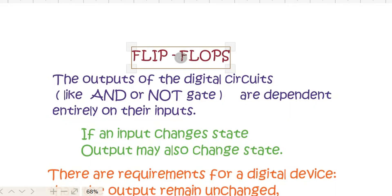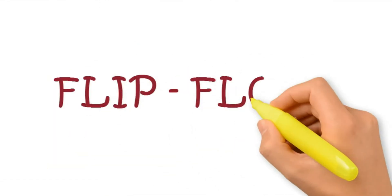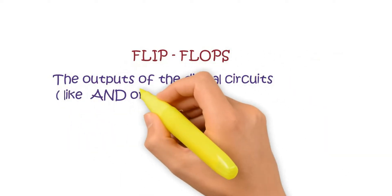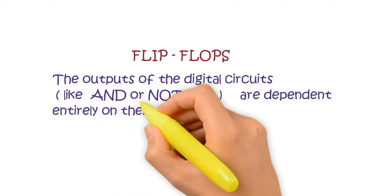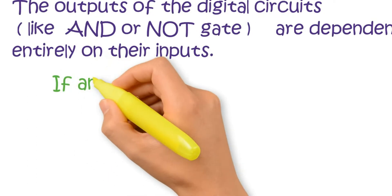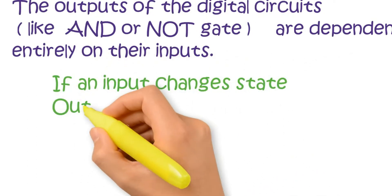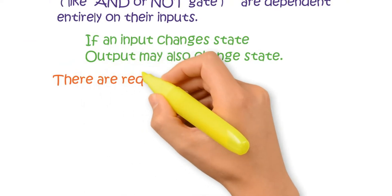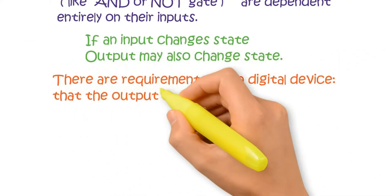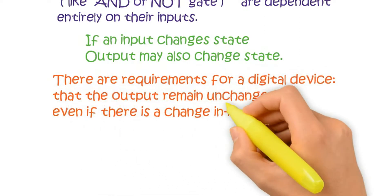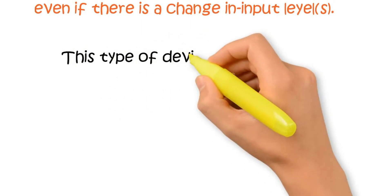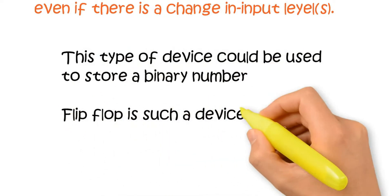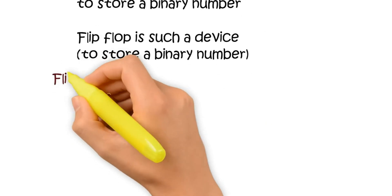Our today's topic is flip-flops. The output of digital circuits, like AND or NOT, are dependent entirely on the inputs. Output depends upon the input — if the input changes state, output may also change state. But sometimes there are requirements for a digital device that the output remains unchanged even if the input levels change. This type of device could be used to store a binary number. Flip-flop is such a device to store a binary number.